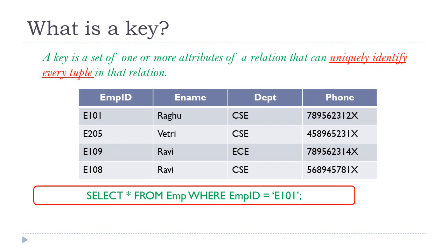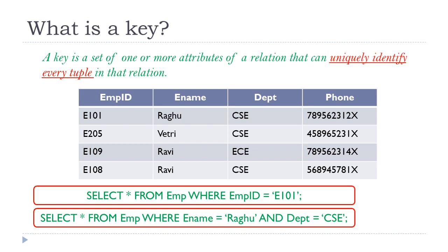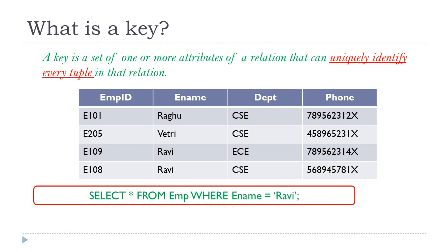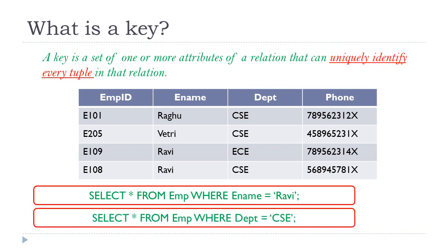For this employee table, SELECT * FROM employee WHERE employee_id = 'E101' returns only 1 record. Likewise, SELECT * FROM employee WHERE employee_name = 'Ragu' AND department = 'CSE' gives either 0 or 1 record. So both queries return at most 1 record, and those attributes can form the key. On the other hand, WHERE e_name = 'Ravi' returns two records — it is not uniquely identifying. Similarly, WHERE department = 'CSE' results in three records. Hence, employee name and department individually cannot be keys.